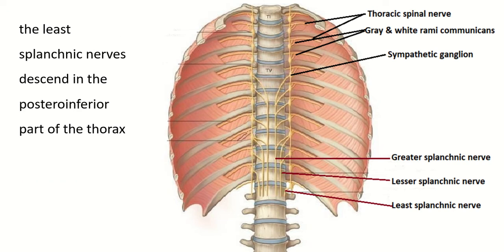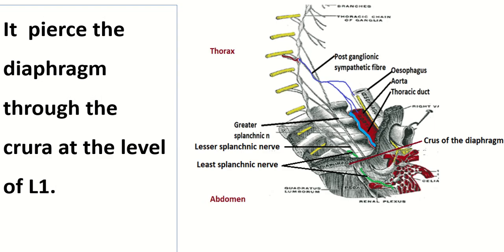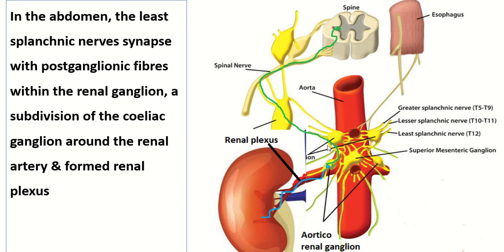As it enters the abdomen, the least splanchnic nerve pierces the crus of the diaphragm at the T12 level. Here you can see this is the preganglionic sympathetic fiber — this is the least splanchnic nerve.